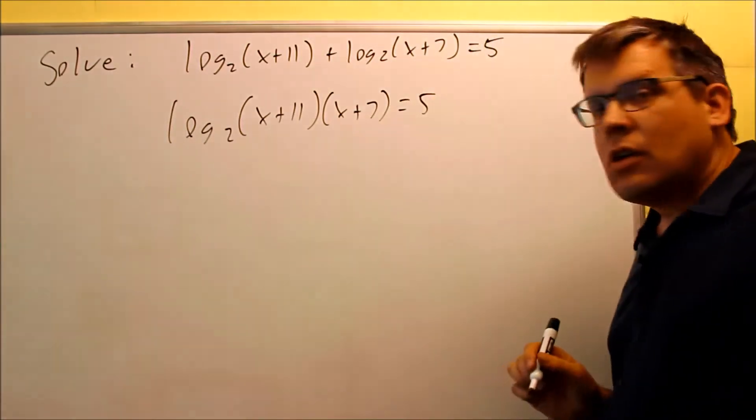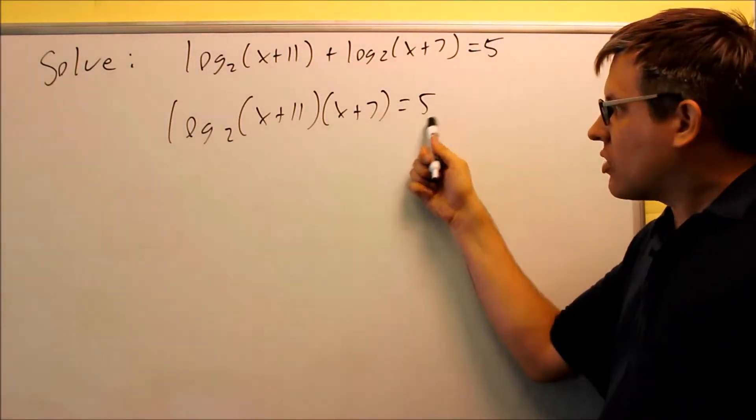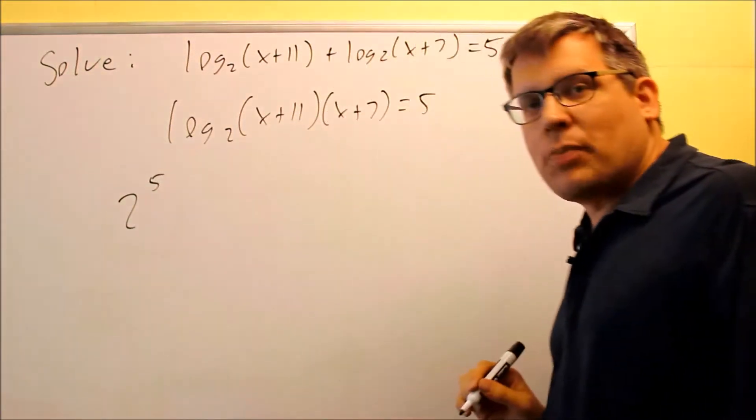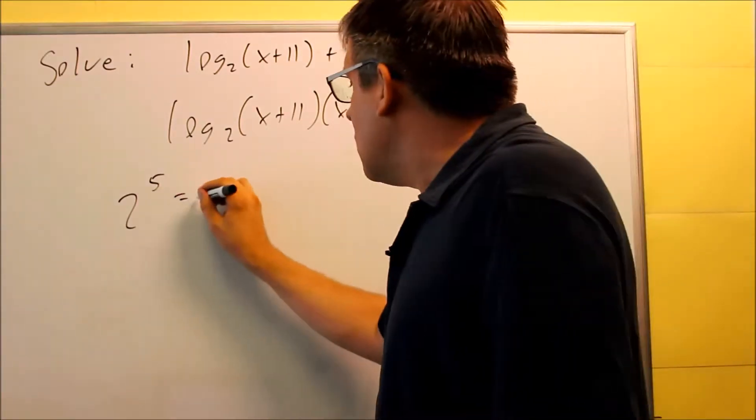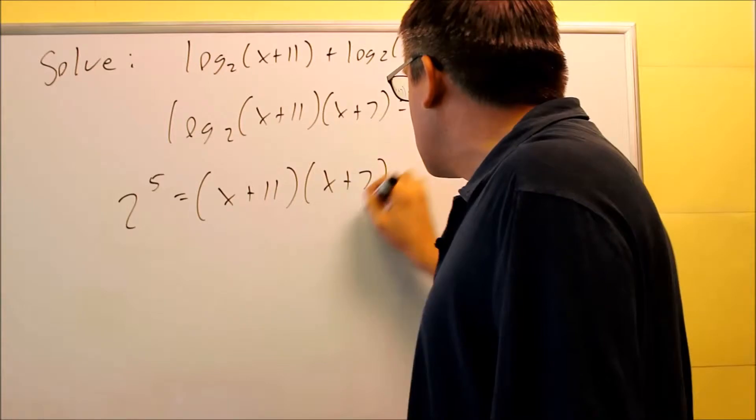That equals five. You're taking the base, raised to the number after the equal sign is going to equal all this. So I have two raised to the fifth power, that's going to equal x plus eleven times x plus seven.